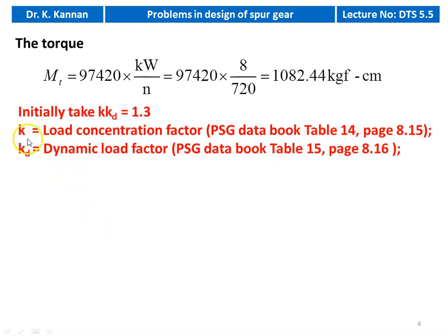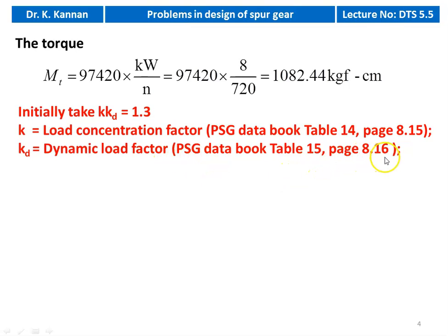Then we find the K and Kd values. K is the load concentration factor, available on page 8.15, and Kd is the dynamic load factor, available on page 8.16. Initially we assume KKd equal to 1.3 for the preliminary calculation.